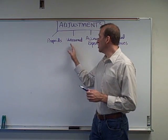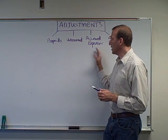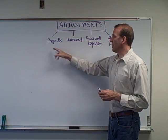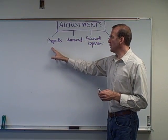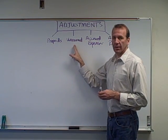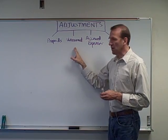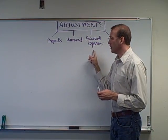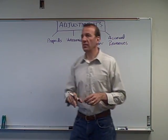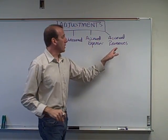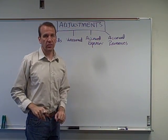There are four types of adjustments that we're going to look at. We have our prepaid adjustments, our unearned revenue adjustments, our accrued expenses, and our accrued revenues.